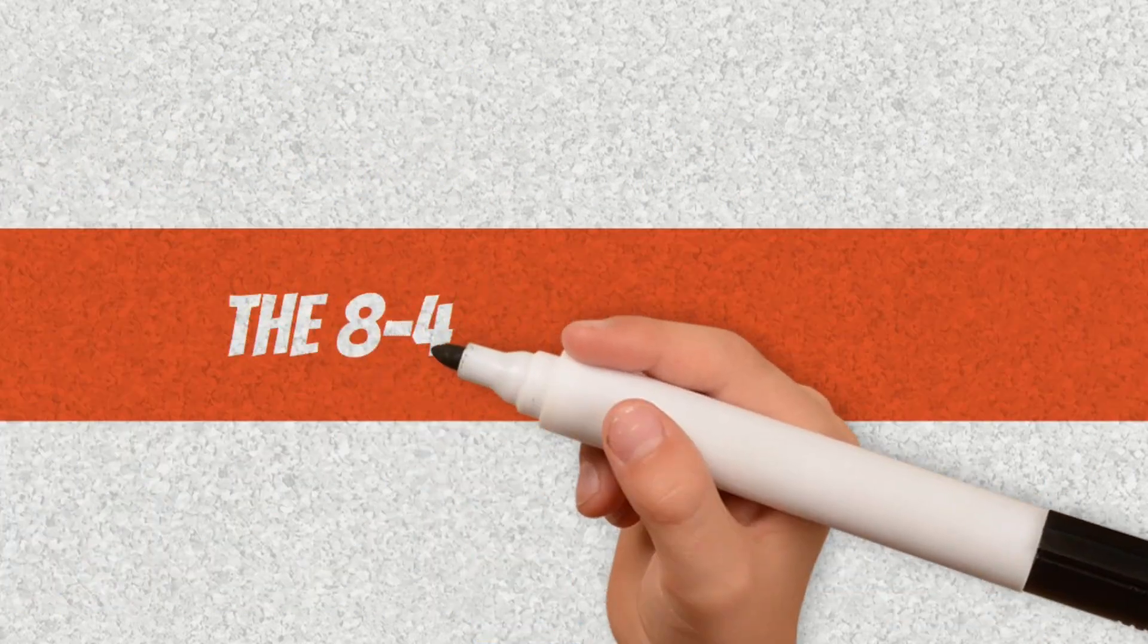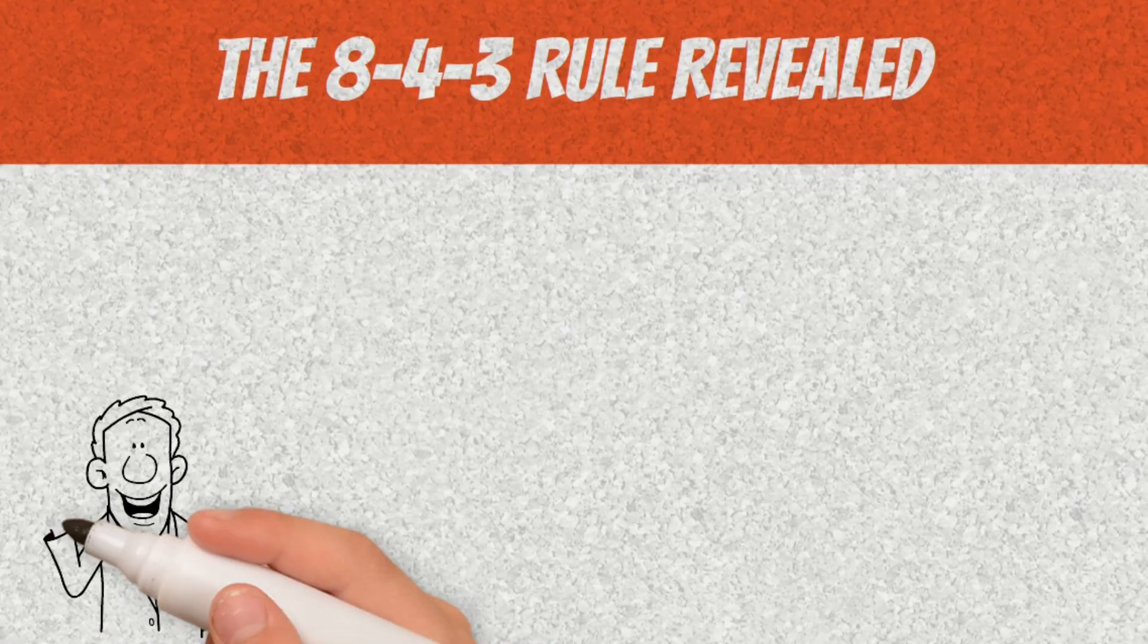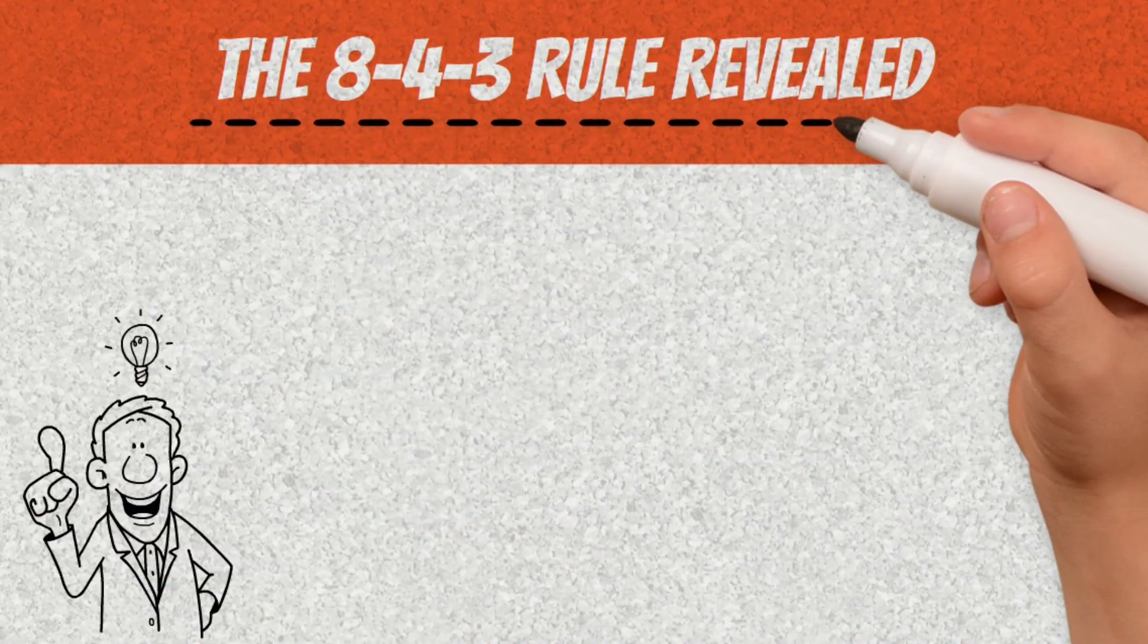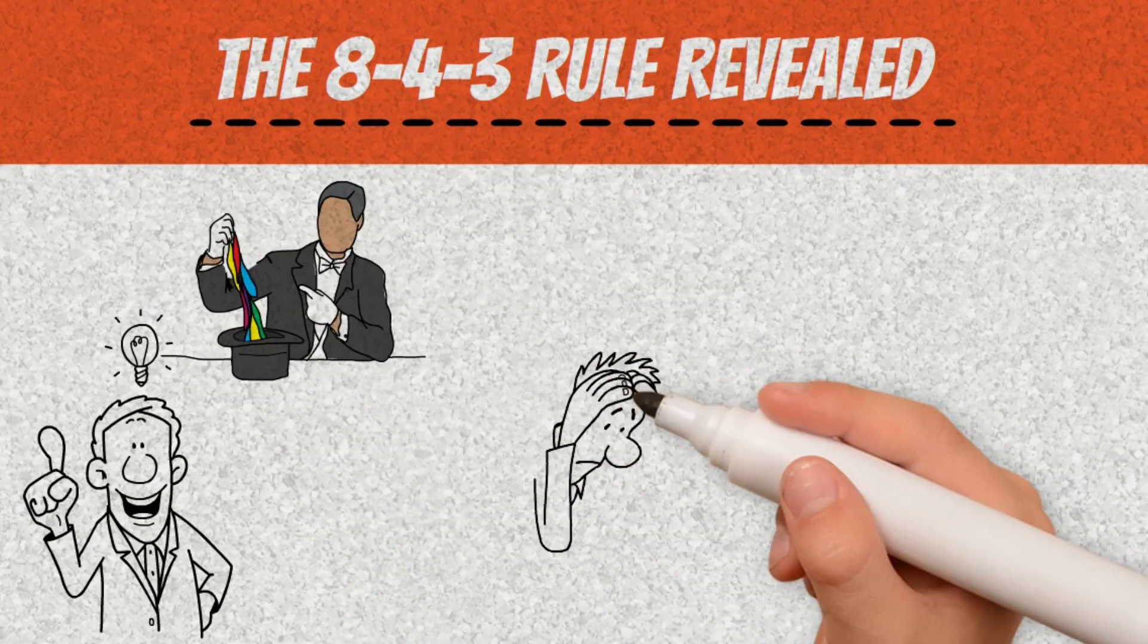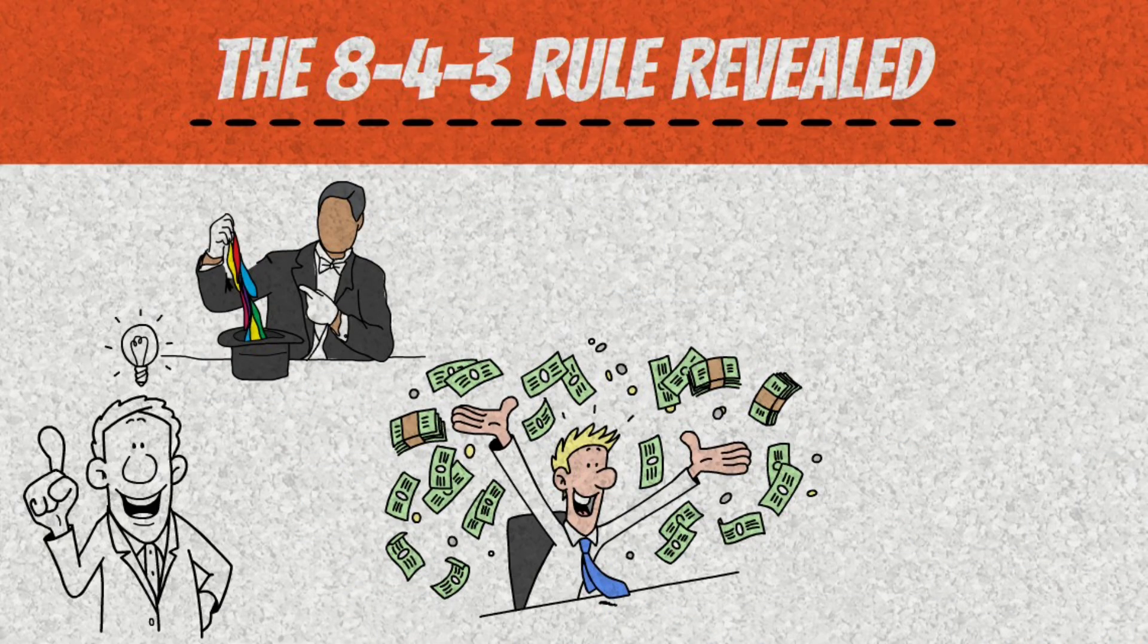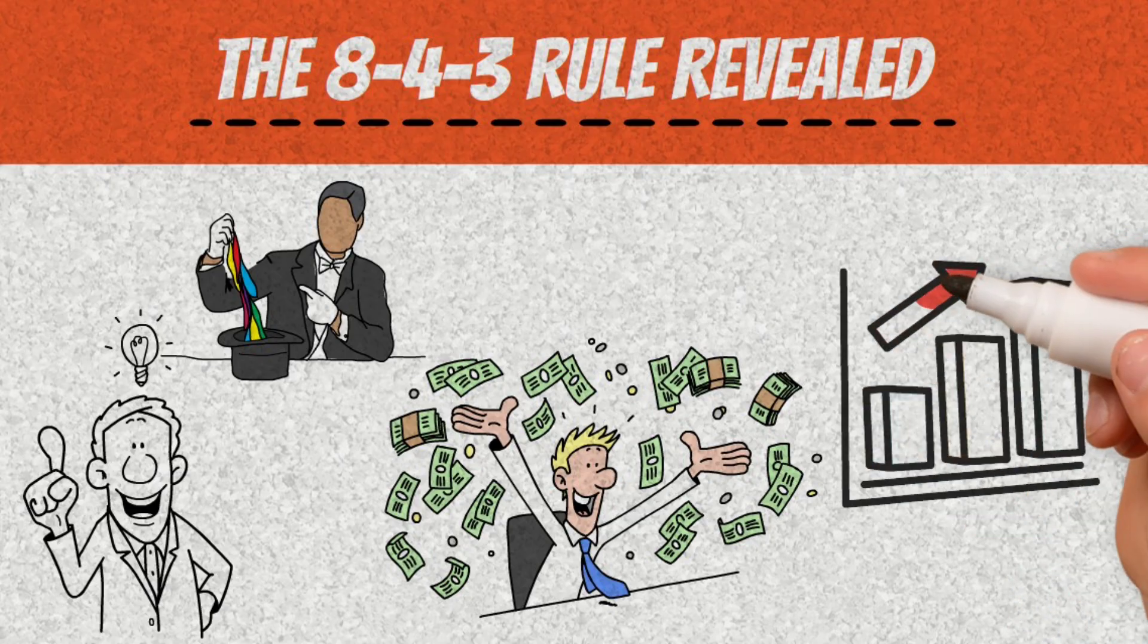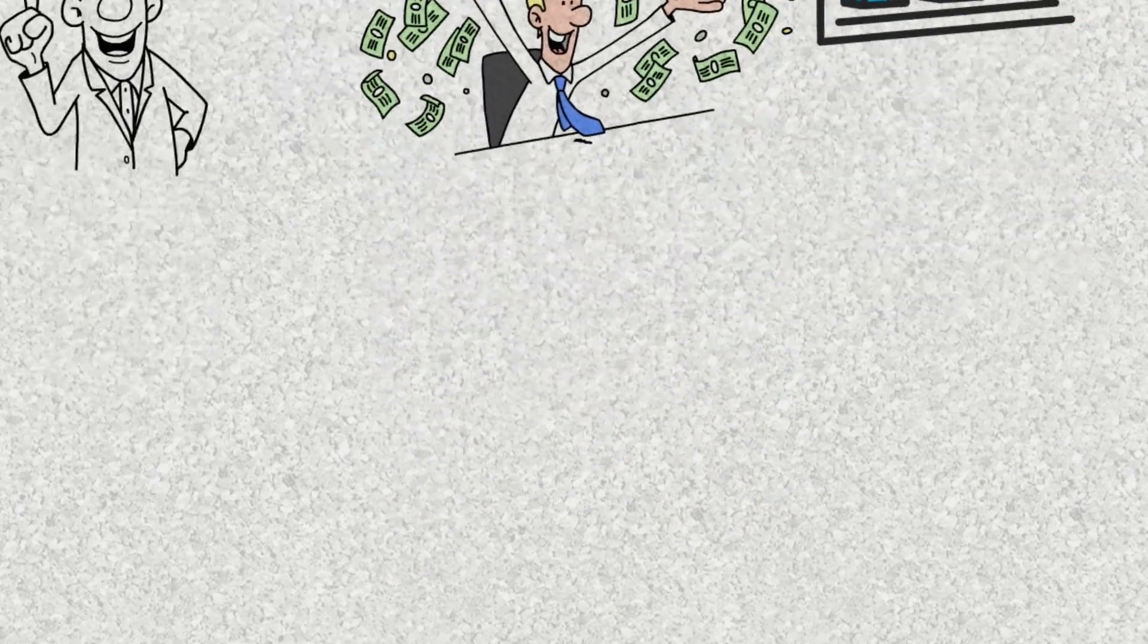The 8-4-3 rule revealed. Now that you understand the importance of letting money work for you, it's time to clearly and objectively learn the 8-4-3 rule. This is not a magic formula, much less a shortcut to getting rich overnight. It's a simple but incredibly effective method to speed up the effect of compound interest and organize your wealth growth strategy.